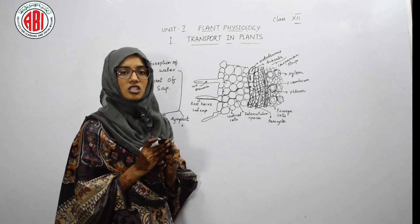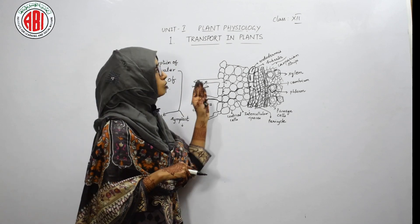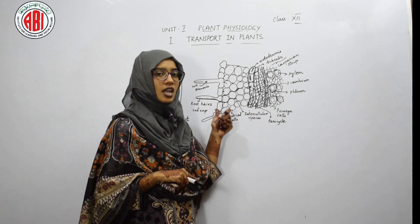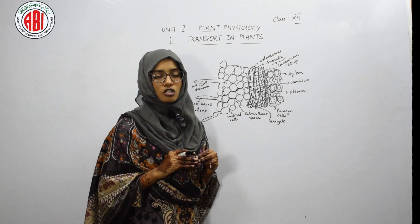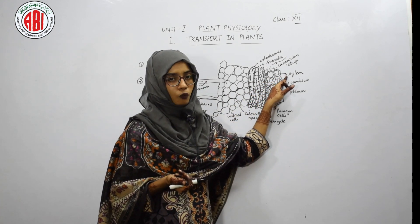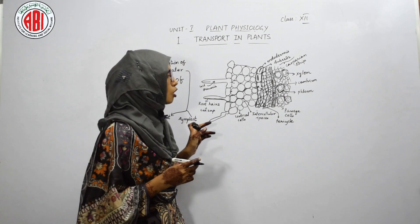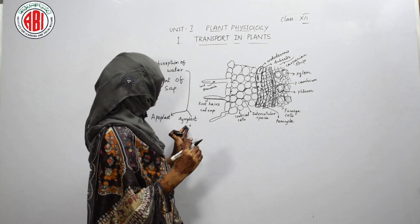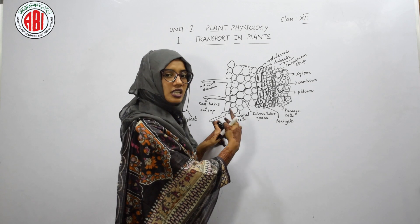The water moved through both apoplast and symplast must reach the xylem vessels. When water reaches the xylem vessels through apoplastic and symplastic pathways, it is transported upward to the leaves. The xylem vessels help in the upward movement of water in the plant. Maximum absorption of water takes place through apoplast, while less water is absorbed through symplast. Cortical cells show both apoplastic and symplastic movements.